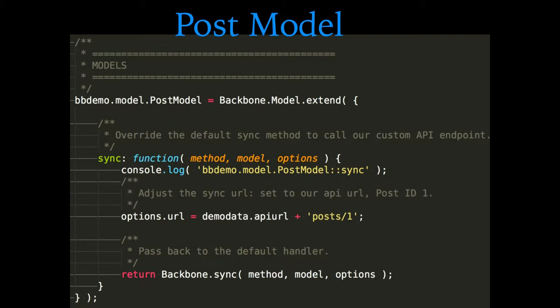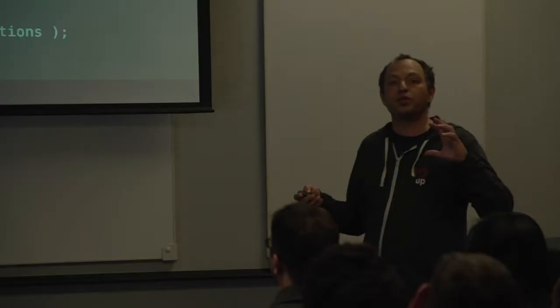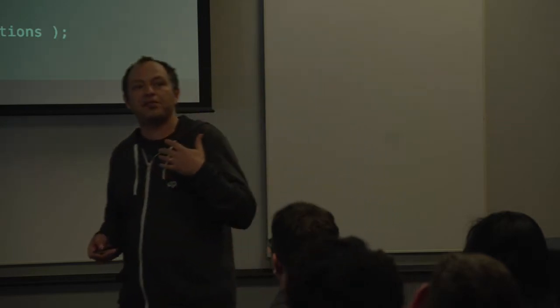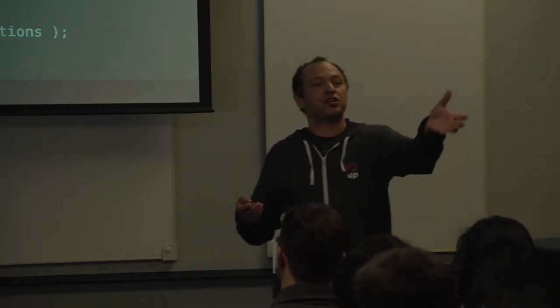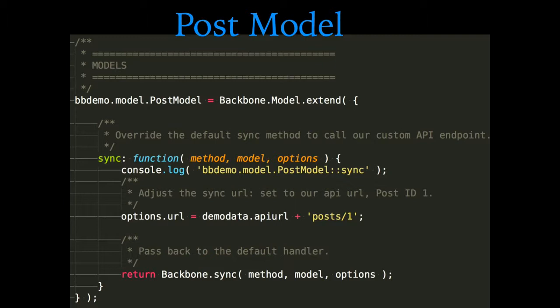Here's the model. A model is what contains the data. It's a post model — I'm representing a post. I'm just going to extend Backbone.Model — this extend is part of Underscore, so Backbone leverages a lot of Underscore functionality. Basically all I'm doing in this model is overriding its sync method. The sync method is what a model or collection uses to retrieve data from the server. I'm giving it the URL of the endpoint I just localized — demoData.apiURL — and appending /posts/1, which gives me the first post. That's all the model has to know: how does it get its data.